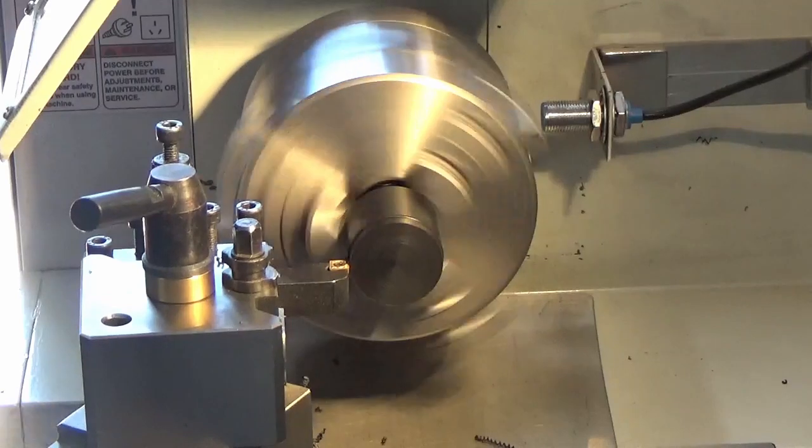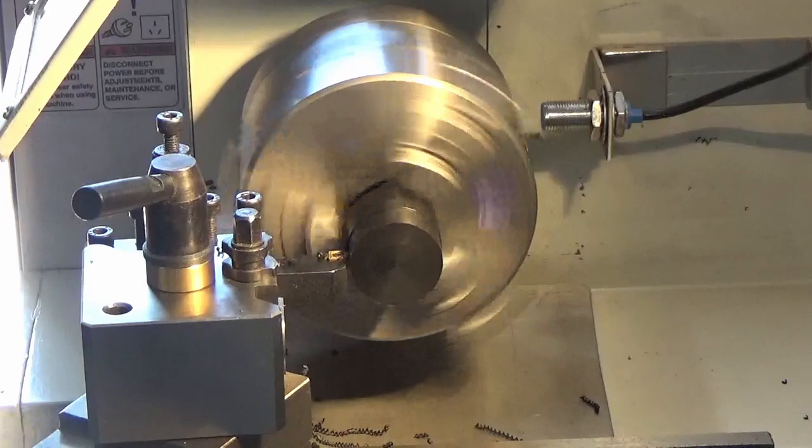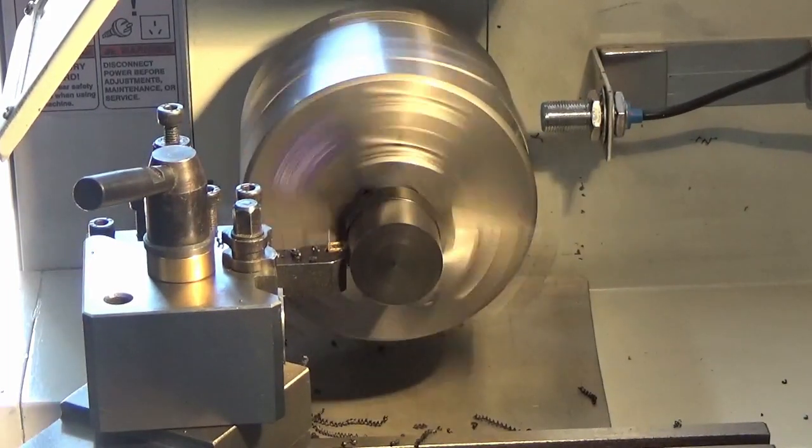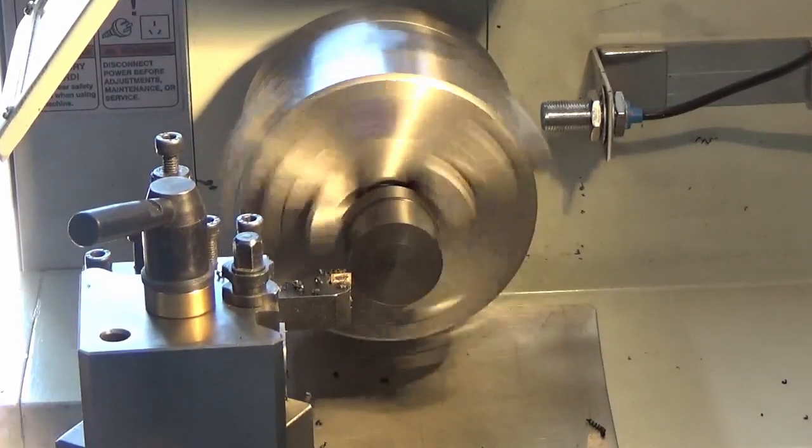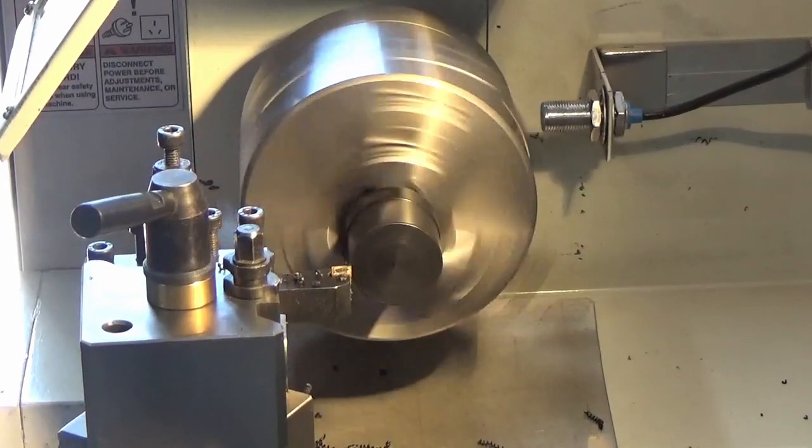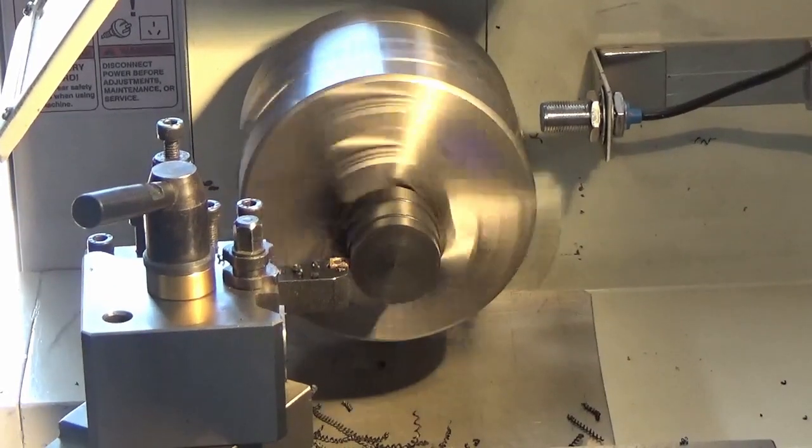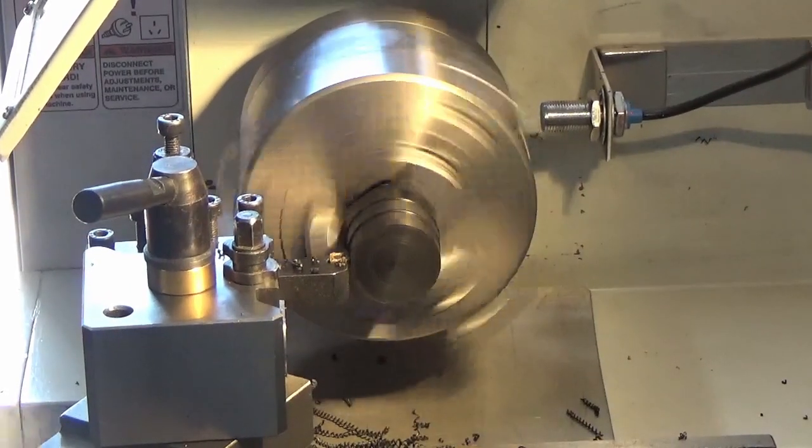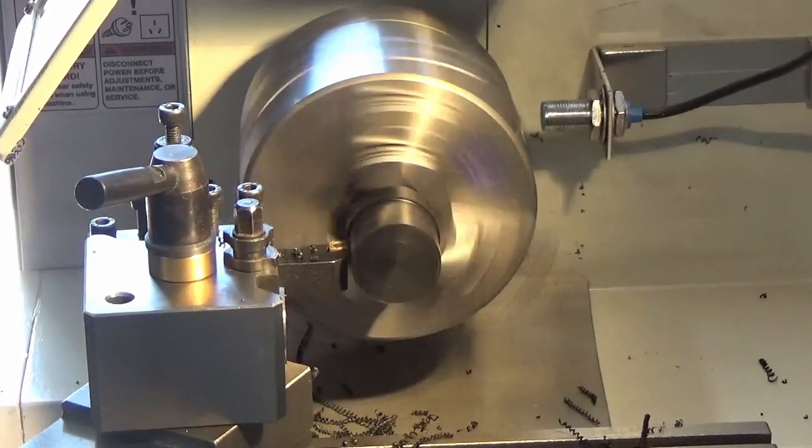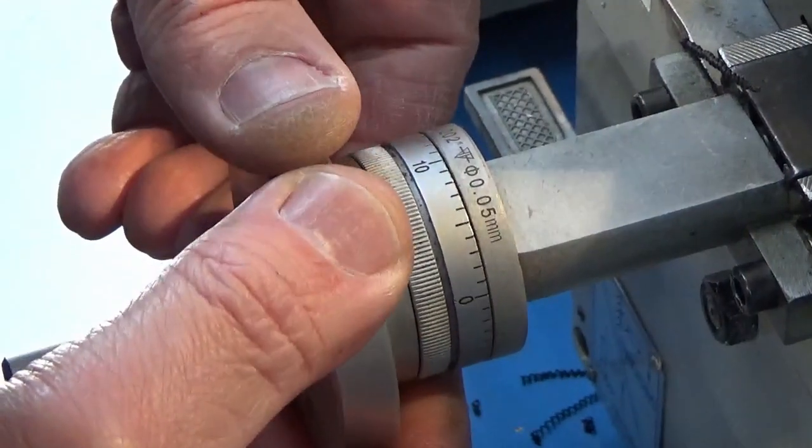I keep stopping every now and then just to break the plastic, otherwise you're going into a bird's nest. As you can see, we'll get to the stop, back out, take it in another mil, and then we'll just repeat until we get down to that 18 mil. That's half a mil, one mil.